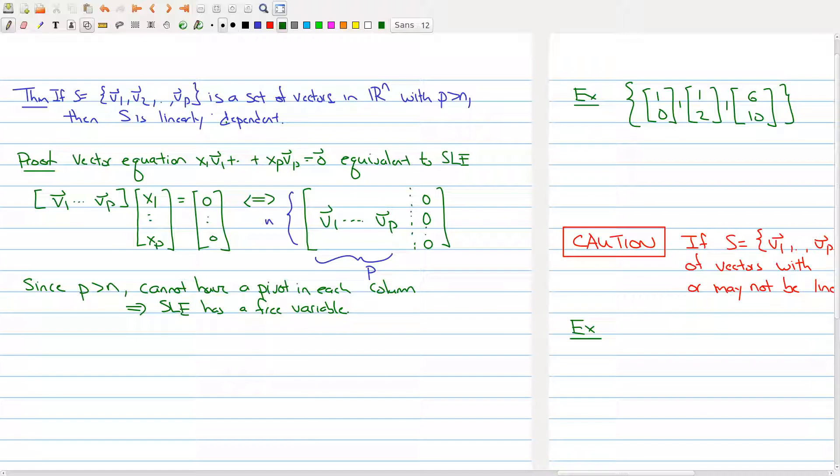So because it has a free variable, it will actually have an infinite number of solutions. So, the system of linear equations has an infinite number of solutions. And because it has an infinite number of solutions, that means that the vectors are linearly dependent.